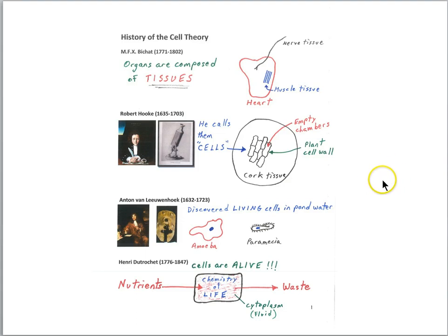In this lesson we'll take a look at the history of the cell theory. The cell theory states that all living things are composed of these units that we call cells. For example, animals and plants are made of multiple cells, and some organisms are just single-celled organisms.